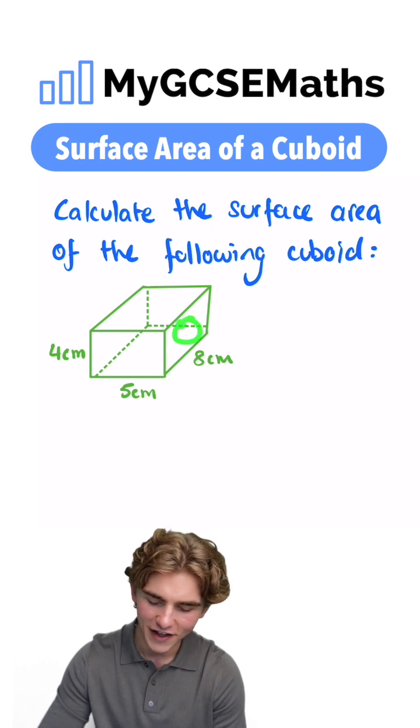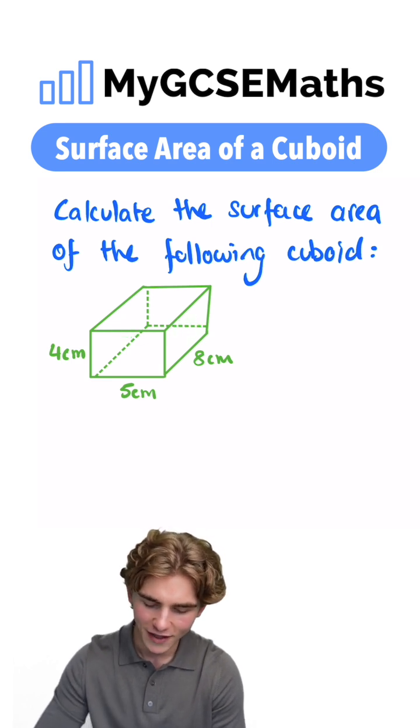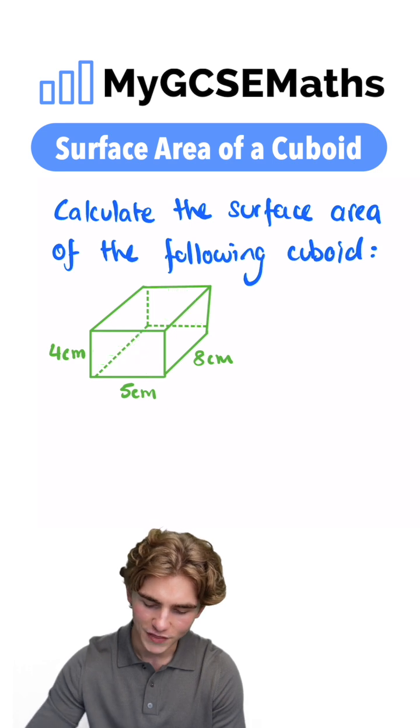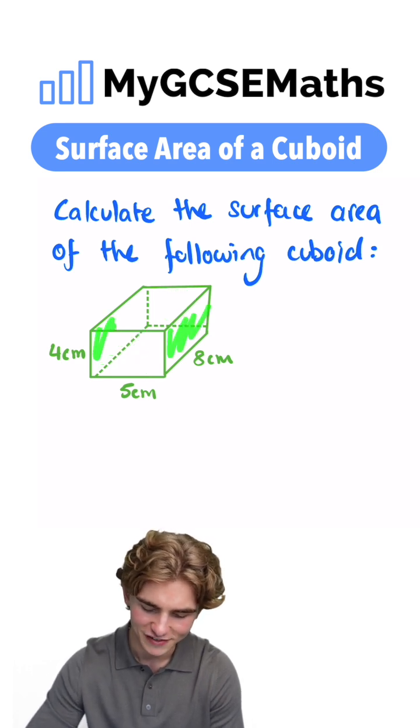We can use the fact that each of our faces come in pairs. We can see that this face here is going to be the same size as this face here. This face here is going to be the same size as this face here.